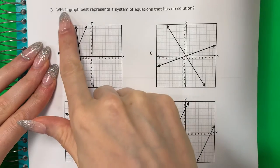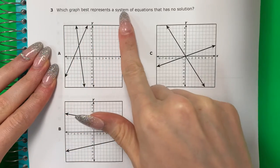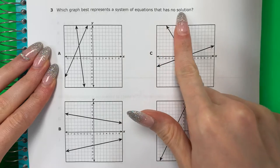Question 3. Which graph best represents a system of equations that has no solution?